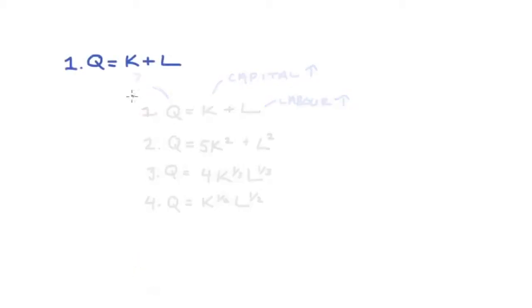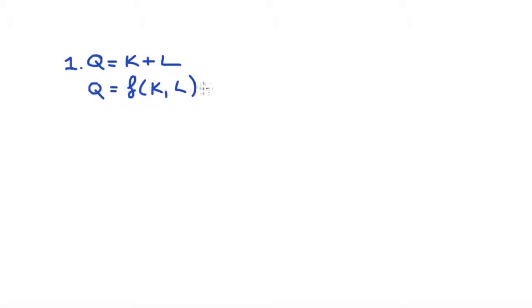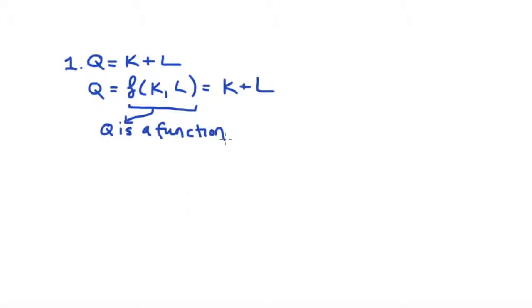So let's start with number one. Q, the firm's quantity, is equal to the level of capital they have plus the level of labour. The first thing I'm going to do is include some functional notation so it's clear that the firm's output Q is equal to a function of the firm's inputs — the variables capital and labour — which is just equal to K plus L. I always add this in so I can be really clear about our inputs to production.